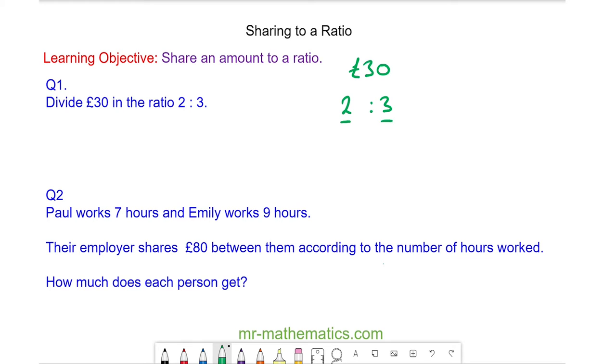The ratio two to three means that we have a total of five shares, and to find the value of one share we're going to do the amount of £30 divided by the total number of shares, which is five. This gives you £6 per share.